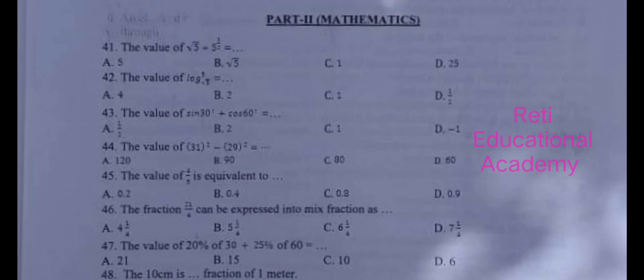Question number 41: The value of radical 5 divided by 5 power 1 upon 2 is A) 5, B) radical 5, C) 1, D) 25. The correct answer is C, 1.